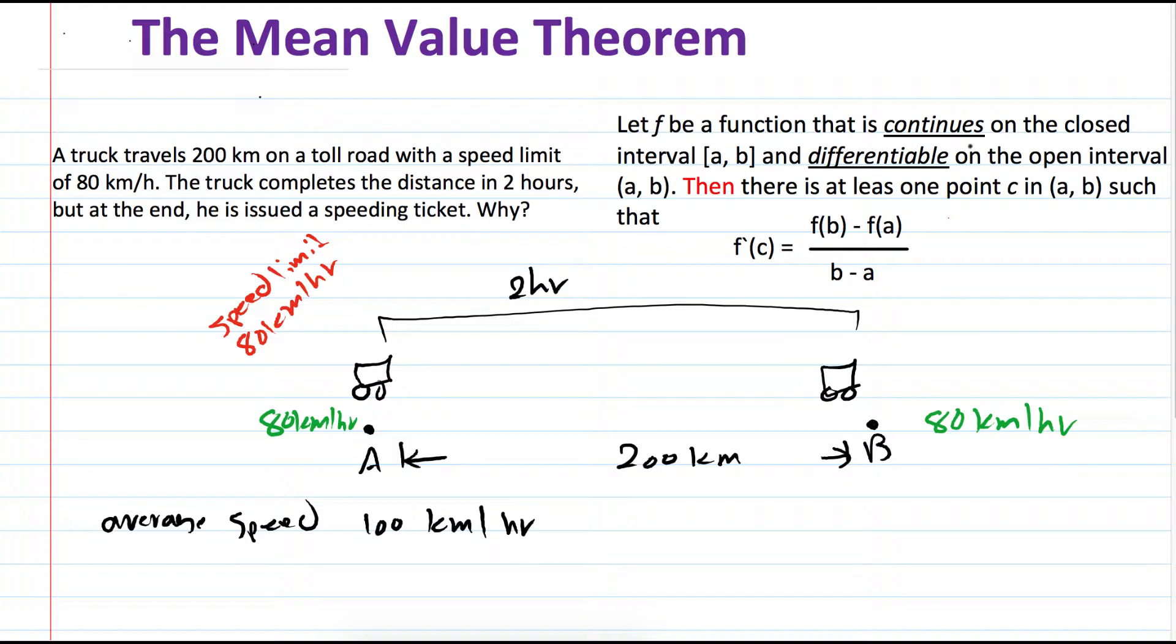And basically, this is the average speed. It is f(b) minus f(a) over b minus a. If his average speed is 100 kilometers per hour, then that means at one point in his travel, his speed has reached 100 kilometers per hour.